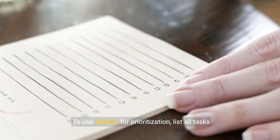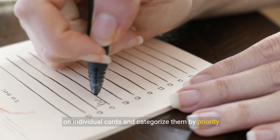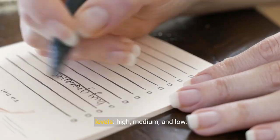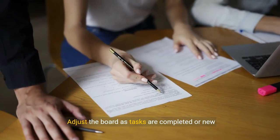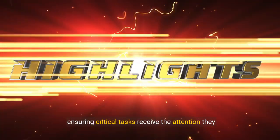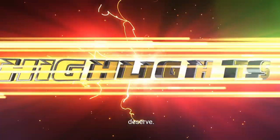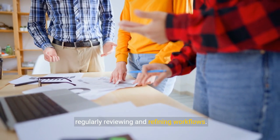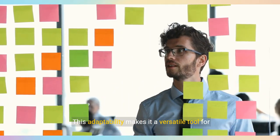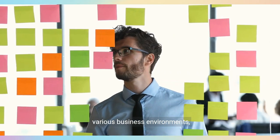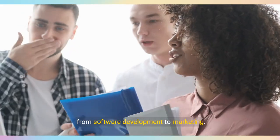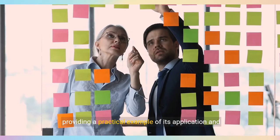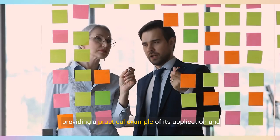To use Kanban for prioritization, list all tasks on individual cards and categorize them by priority levels—high, medium, and low. Adjust the board as tasks are completed or new ones arise, ensuring critical tasks receive the attention they deserve. Kanban encourages continuous improvement by regularly reviewing and refining workflows. This adaptability makes it a versatile tool for various business environments, from software development to marketing. As we continue, we'll explore how Kanban transformed a business scenario, providing a practical example of its application and efficiency.